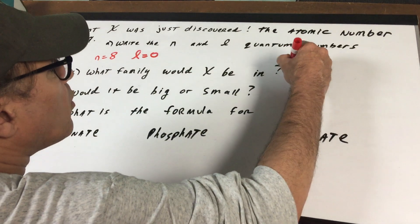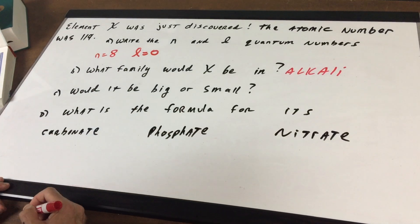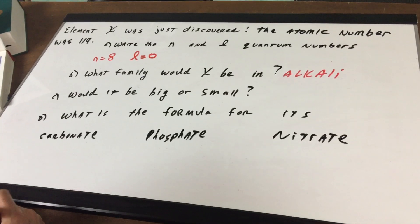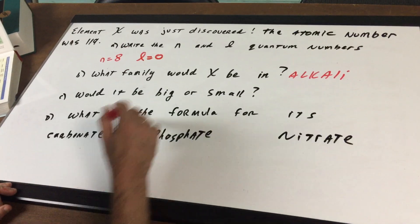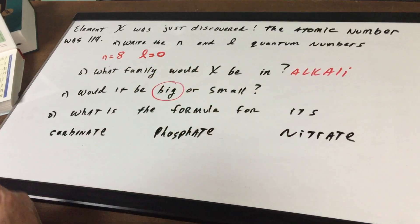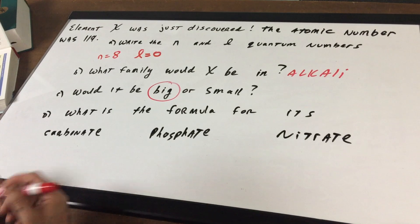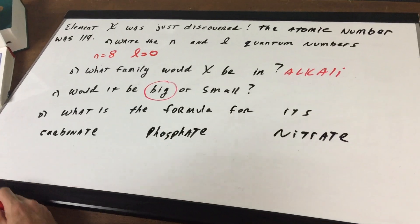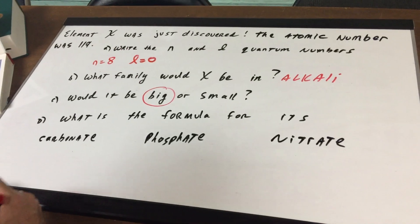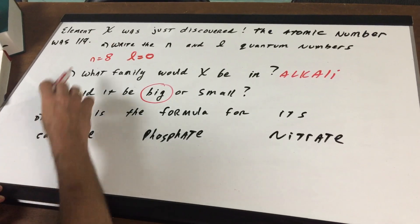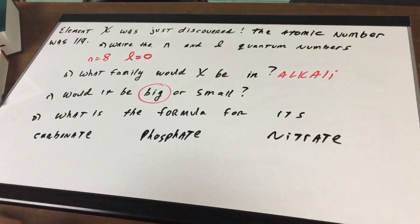The family will be the alkali metals. Don't forget group 1 is the alkali metals and group 2 is the alkaline earth metals. Obviously this would be a monster. It would have 119 protons and you would also have 119 electrons. That means you would need to go way out into the n equals 8 principle energy level to put that electron in.